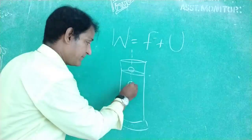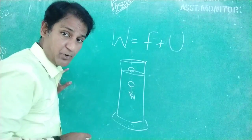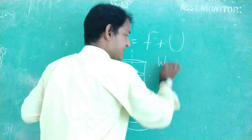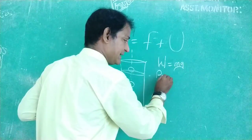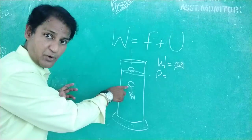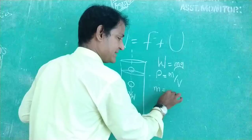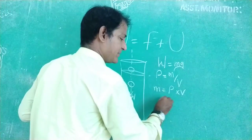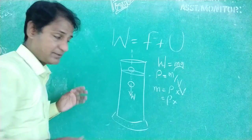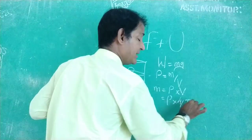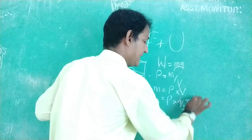Now, if W is the weight of the spherical metal ball, we all know that W is equal to M into G. And what is M? We also know that density of this metal ball is equal to mass by volume, or mass is equal to rho into V. Rho into what is capital V, the volume of the spherical metal ball, that is 4 by 3 pi. If A is the radius of the spherical metal ball, then pi A cube.